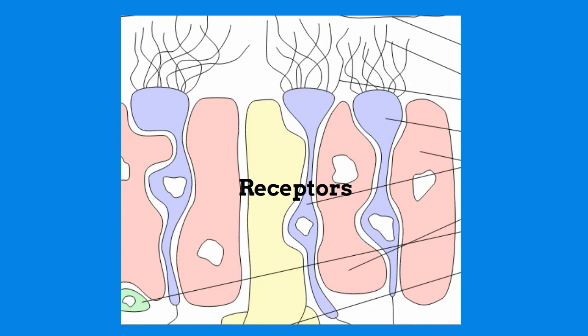We have around 450 different types of these receptors and each one can detect a slightly different smell.